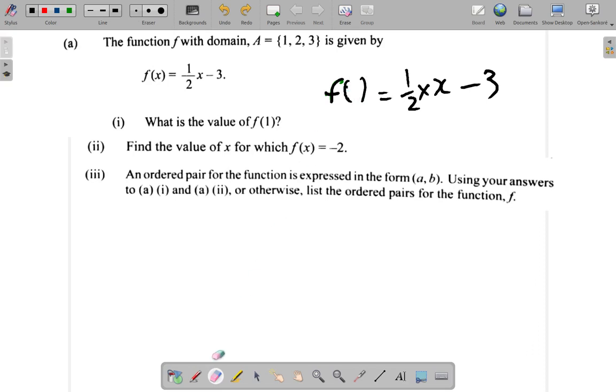So this you change to 1, and this you also change to 1. So that's f of 1 now. So what you do is say half times 1 minus 3, which becomes half minus 3, which is negative 2 and a half. Half minus 3 is negative 2 and a half.